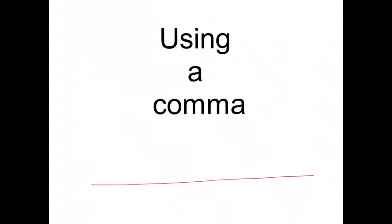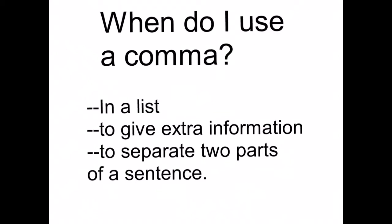In this lesson we're going to look at how to successfully use a comma in our writing. First, let's recognize what a comma is and not confuse it with an apostrophe. A comma goes on the line of writing, whereas an apostrophe — like in the word 'don't' — is in the air. Commas are used in a list, to give extra information, and to separate two parts of a sentence.